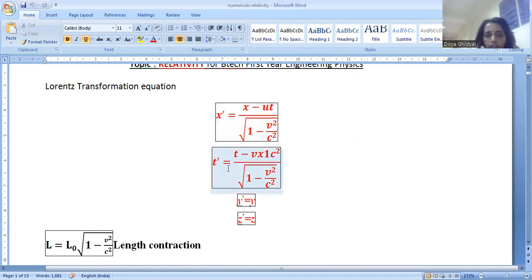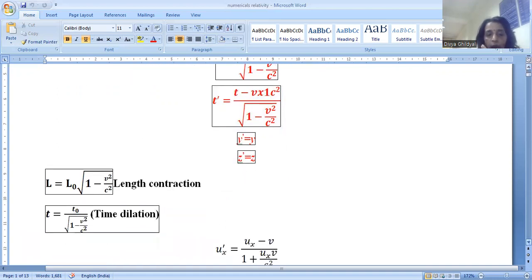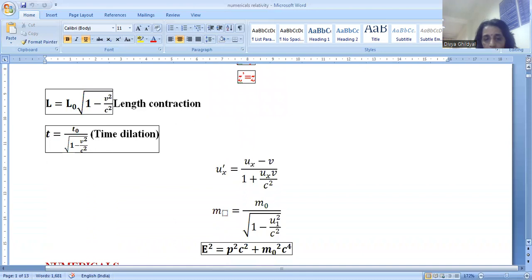Time t dash is equal to t minus vx upon c square under root 1 minus v square by c square. y and z transformation remain unchanged. Length contraction is equal to L is equal to L not under root 1 minus v square by c square. Time dilation t is equal to t not upon under root 1 minus v square by c square.